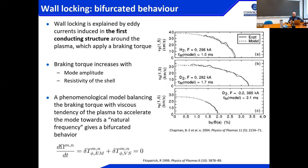It turned out that it is the first conducting structure around the plasma that matters, and depending on its resistivity there is more or less braking torque. Such a braking torque is a balance between the drag by the plasma and the electromagnetic torque; it depends on the mode amplitude, the resistivity of the shell, and the gas — in deuterium and hydrogen the torque behaves differently due to different viscosity and transport coefficients. As I mentioned on the first day, this is a way to estimate viscosity by measuring the braking when applying error fields.